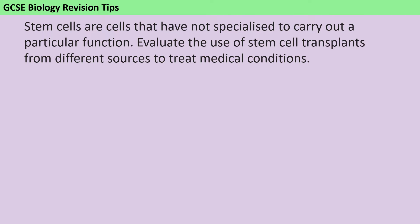The first really important thing about answering this question is that the command word is to evaluate. In all of the GCSE science papers, questions that have the command word evaluate share one common mark scheme. And to get level 3, which is 5 or 6 marks, you need to have written a strongly justified conclusion. What that means is that if at the end of your answer you haven't said which thing is best and backed that up with evidence, then you can't receive more than 4 marks. So it's really important to make sure that you've done this.